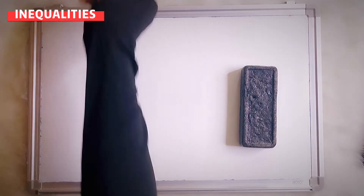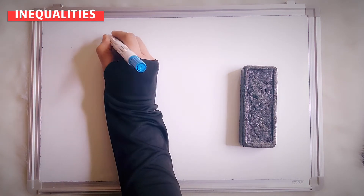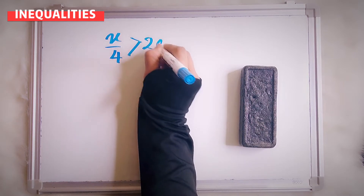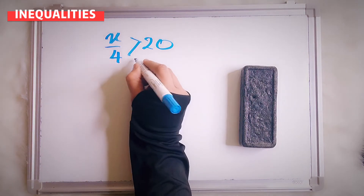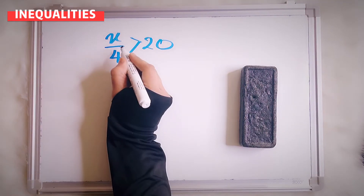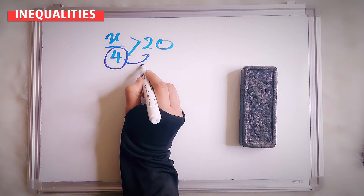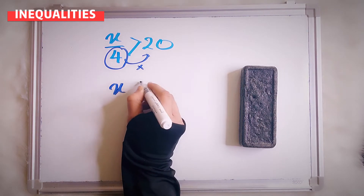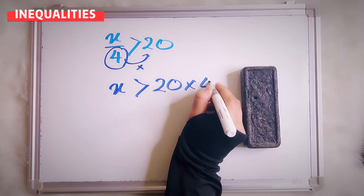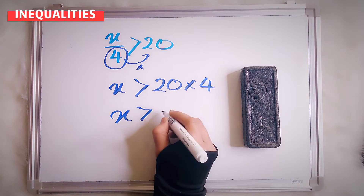How about this question? x over 4 more than 20. Same thing — this is a divide. You want to remove 4 to the other side, so you have to multiply. So x is more than 20 times 4. That means x more than 80.